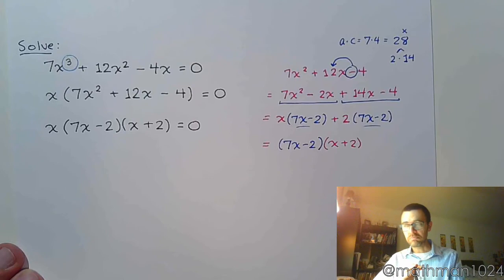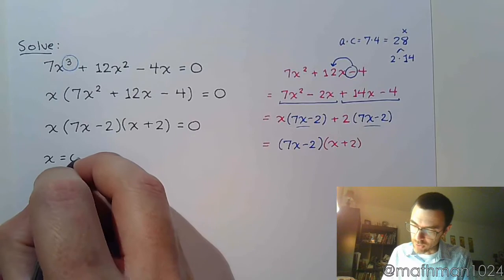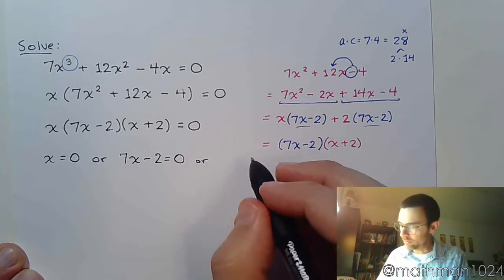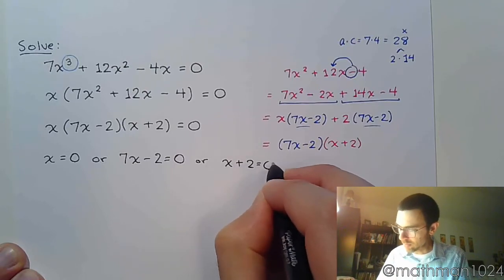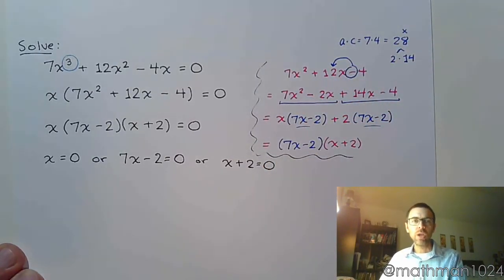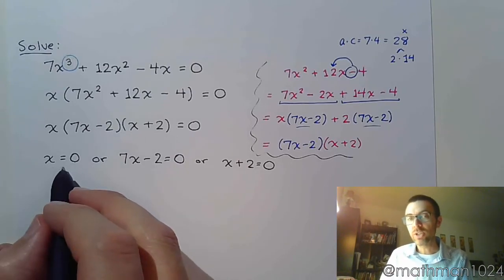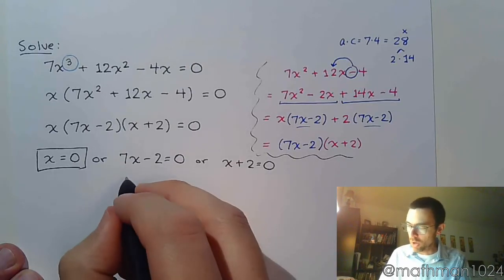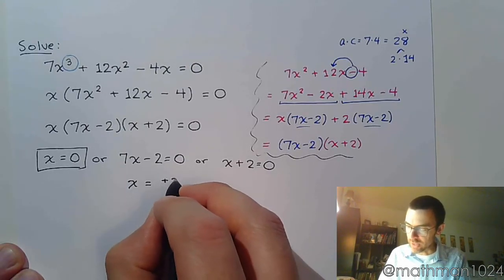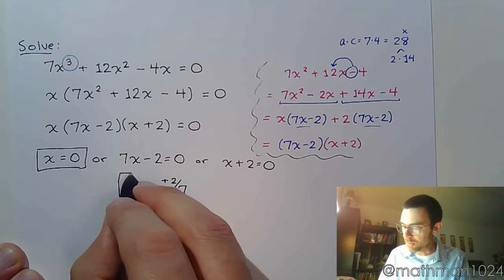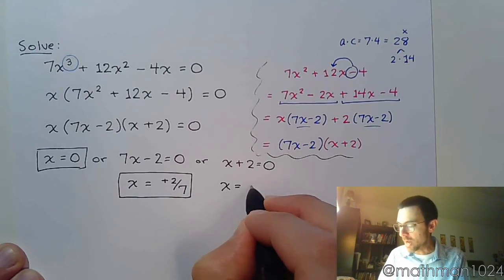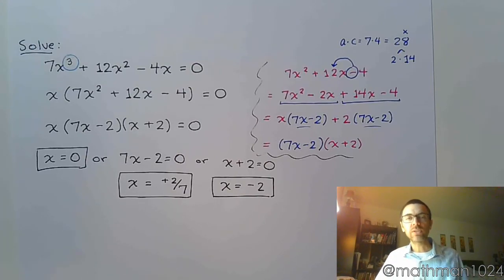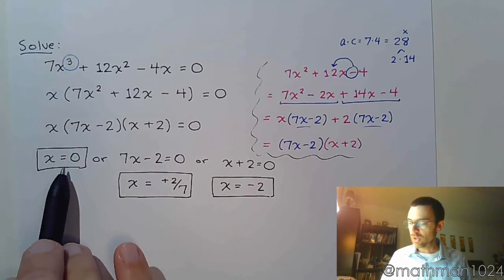The complete factorization is x times (7x minus 2) times (x plus 2) equals zero. We're supposed to have three solutions and we have three factors, so we set each factor equal to zero and solve. x equals 0 is already solved. For 7x minus 2 equals 0, add 2 to both sides and divide by 7 to get x equals 2/7. And for x plus 2 equals 0, subtract 2 on both sides, so x equals negative 2. We expected three solutions, we have three solutions.